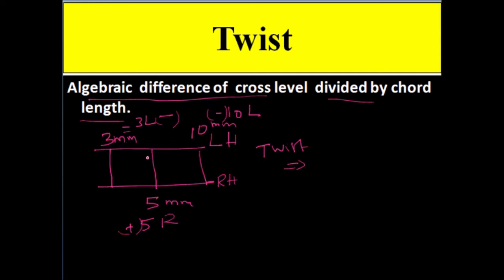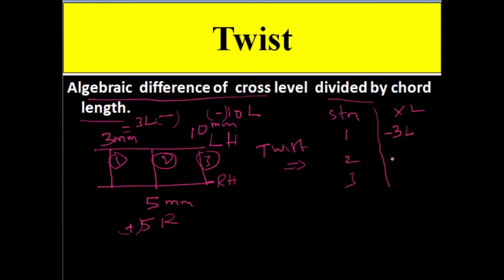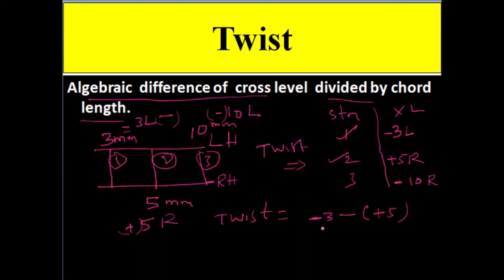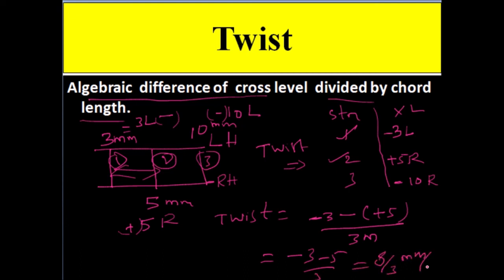Say we have Station 1, Station 2, and Station 3. At Station 1 the cross level is 3L (−3), at Station 2 it is 5R (+5), and at Station 3 it is 10L (−10). Twist between Station 1 and Station 2 equals the algebraic difference divided by chord length: (−3) − (+5) = −8, divided by chord length of 3 meters, giving a twist of 8/3 mm per meter. This is how twist is calculated.